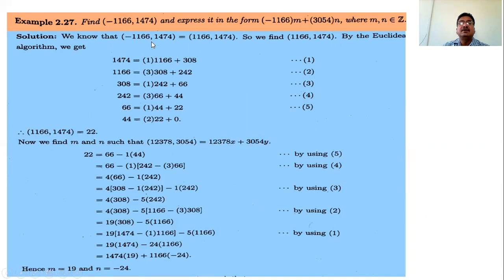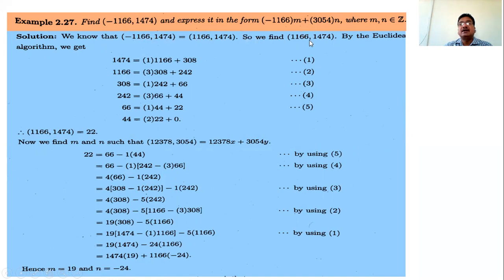The next example: obtain the Greatest Common Divisor of -1166 and 1474 and express it in this form. We know that GCD(-1166, 1474) equals GCD(1166, 1474), so we delete the negative sign and find the Greatest Common Divisor of the positive numbers 1166 and 1474.